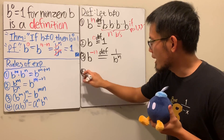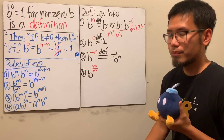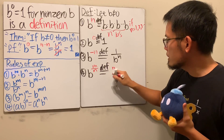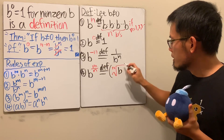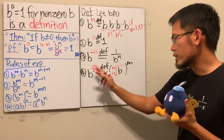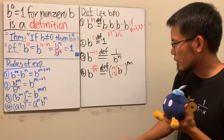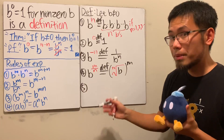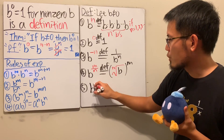If you have b to a fractional exponent m over n, by definition this is the nth root of b to the m — or b to the m, then take the nth root on the outside. You need to be careful if b is negative, but that's the idea. For an irrational exponent, like b to the square root of two, this one is tricky — I have another video on it — but the way we define it is by taking a limit.